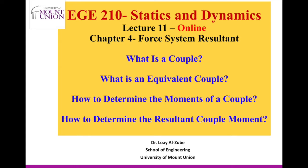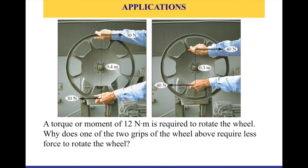In this lecture we're going to continue talking about moments and introduce the couple and the moment of a couple. Looking at this application with a wheel structure: a torque of 12 newton meters is required to rotate the wheel. In the image to the left, we apply a 30 newton force with hands placed 0.4 meters apart, and multiplying 30 by 0.4 gives you the couple moment of 12 newton meters.